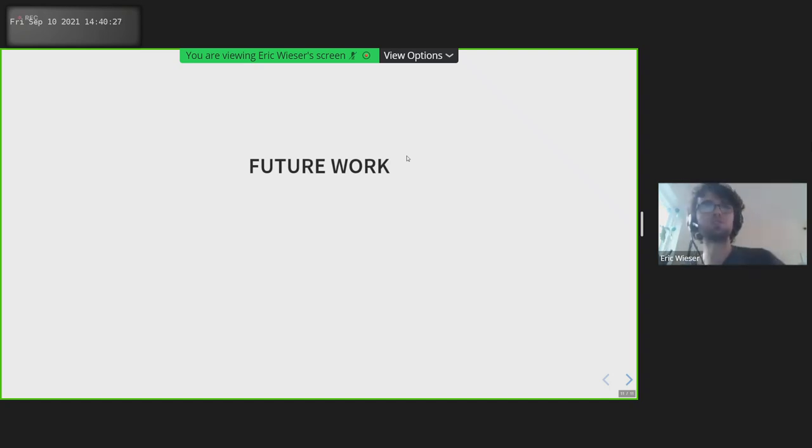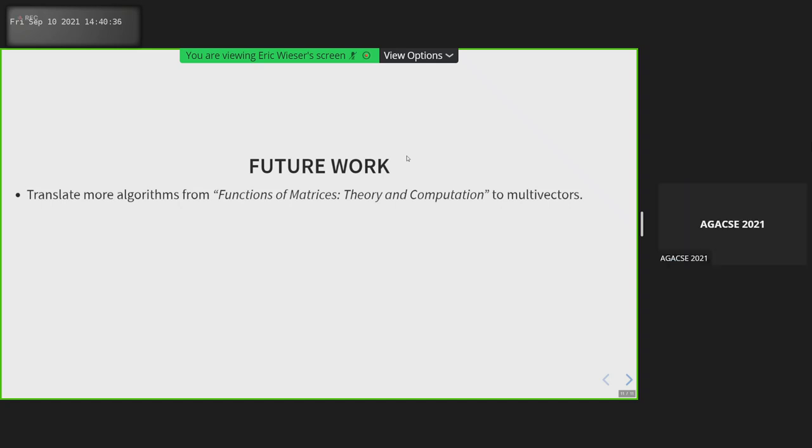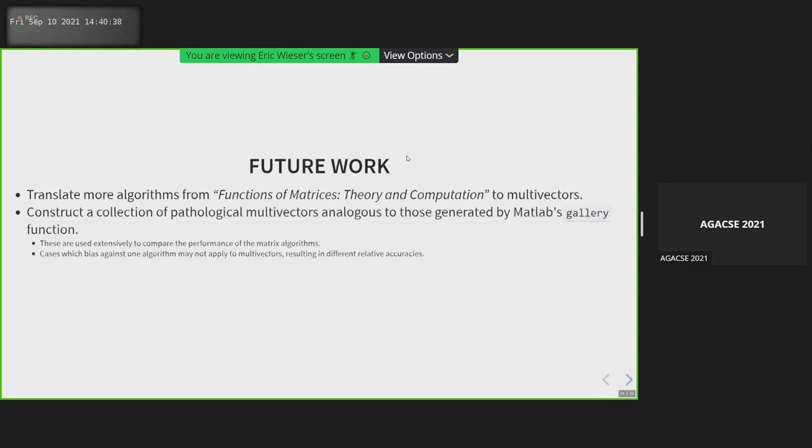So this presentation was short. There is much more work to do here. There are more algorithms to translate. In particular, the logarithm would be an interesting one too. In order to test these, one of the things that Functions and Matrices Theory and Computation uses to compare their algorithms is a set of test matrices which have various pathological properties such as eigenvalues that are way smaller in magnitude than other eigenvalues or eigenvalues which are duplicate. We need an analogous collection of pathological multivectors that would stress test these algorithms to try and find their corner cases where precision is lost.